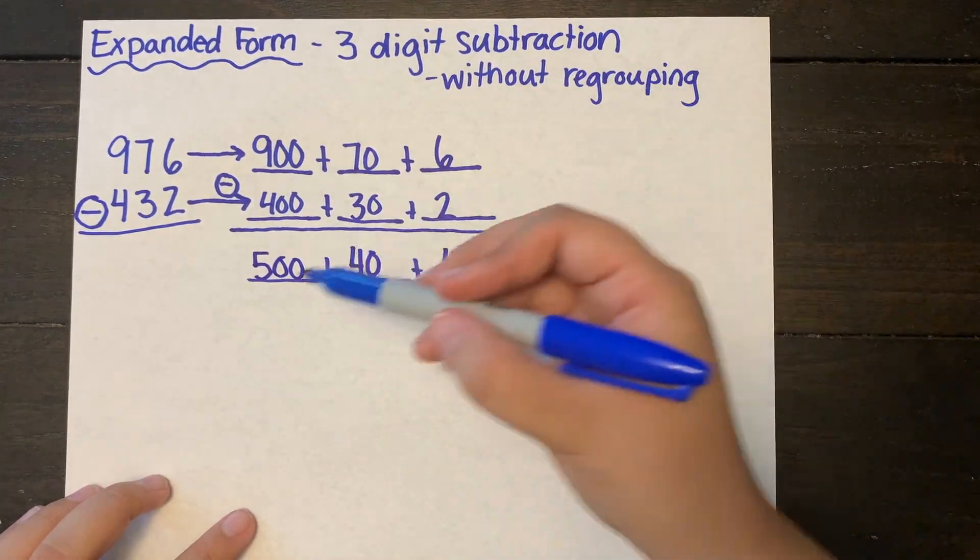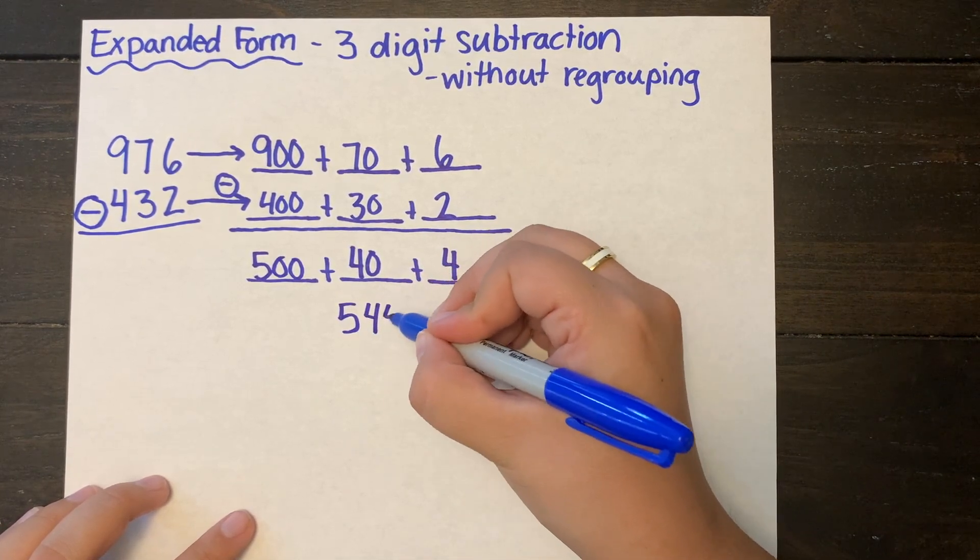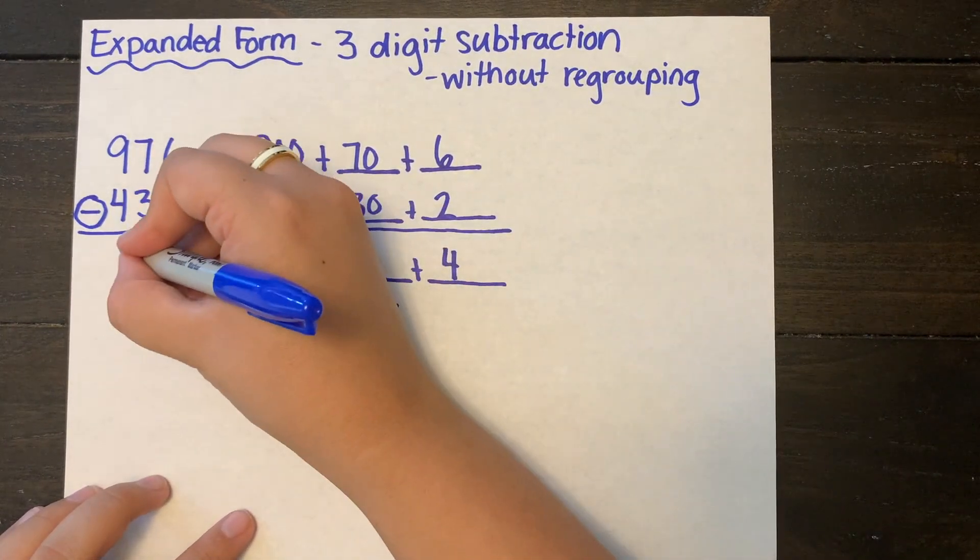I am left just being able to combine that back together. I don't have to regroup. So 500 plus 40 plus 4 equals 544.